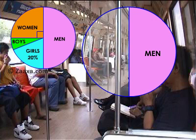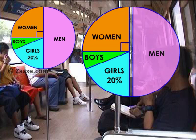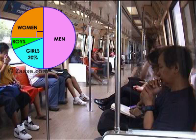Let us take the men section of this pie chart. We can see that the section for men is exactly half of the whole circle. This tells us that half of the people in the train are men. We can also see that the parts of the circle representing women, boys and girls make the remaining half of the circle, which means that women, boys and girls make the remaining half of the people in the train.